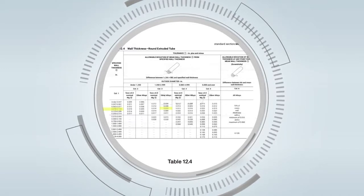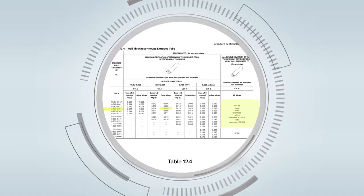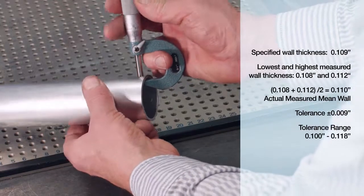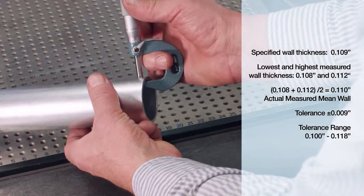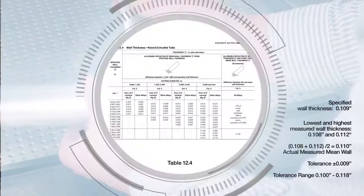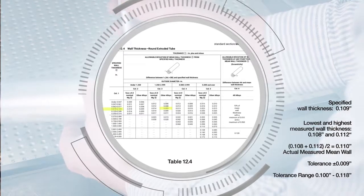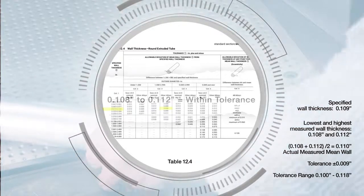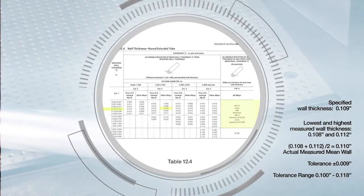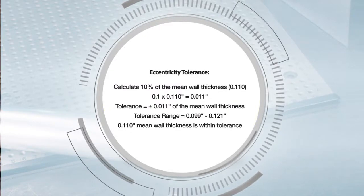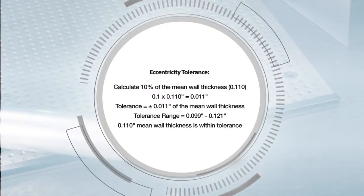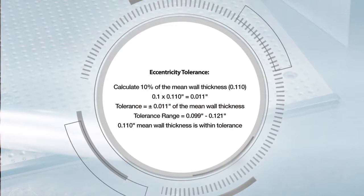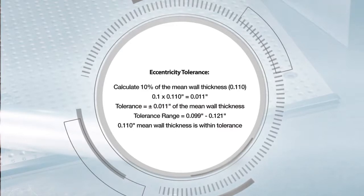The eccentricity is plus or minus 10 percent as stated in column 6. The actual wall thickness measures 0.108 inches to 0.112 inches and the mean is 0.110 inches, which is within the allowable tolerance of plus or minus 0.009 inches. To determine if the wall is within the eccentricity tolerance, you will need to take 10 percent of the 0.110 inches mean wall, which is 0.011 inches. The tolerance range will be plus or minus 0.011 inches, and the actual wall measurements are found to be within this range.